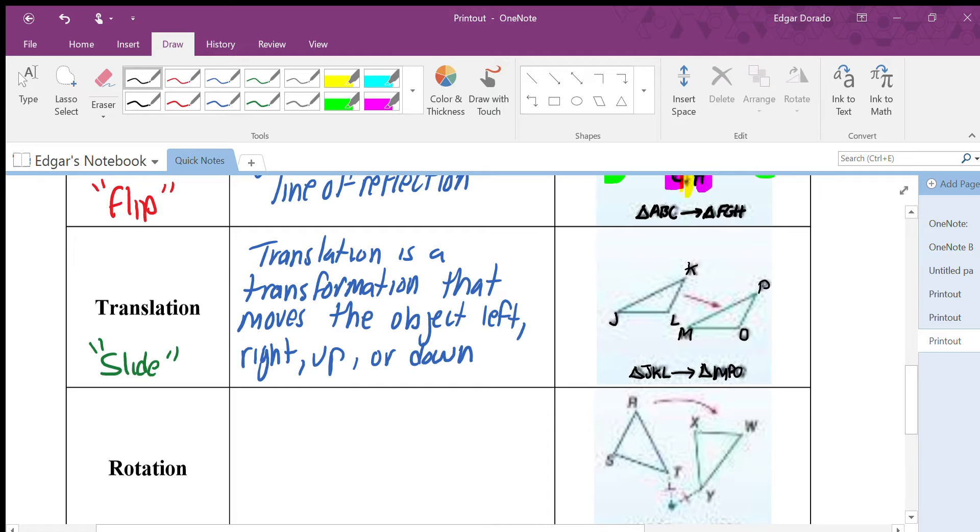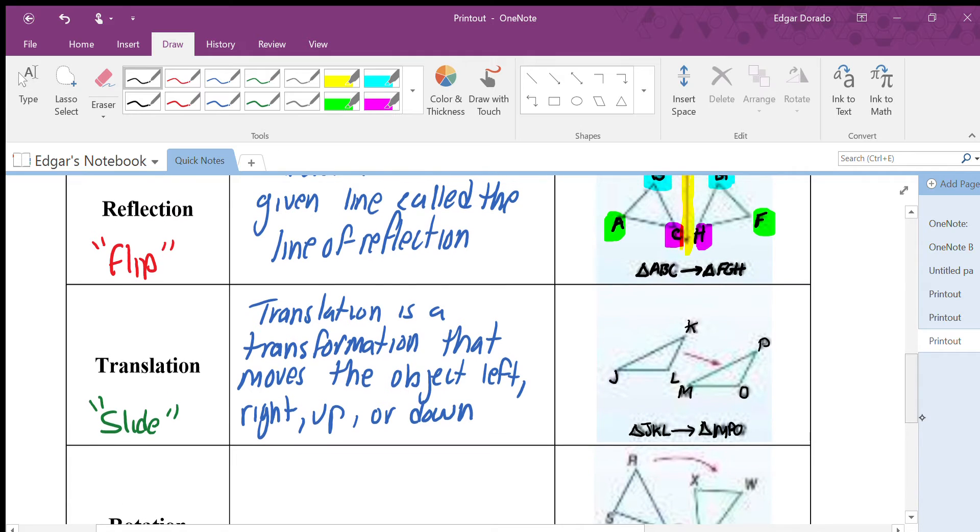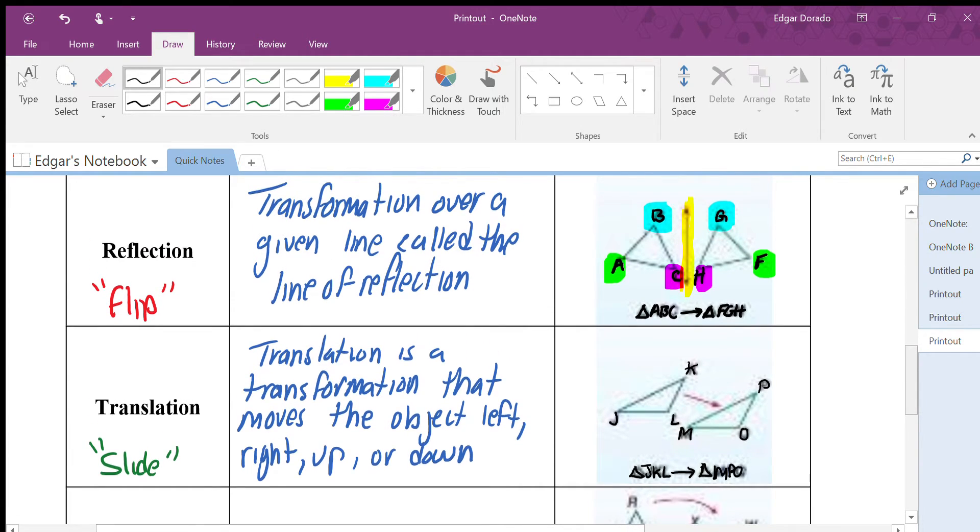All right. So again, notice from J, K, L, that triangle is going not only down a little bit, but also to the right. So that is called a translation. Again, notice that my image basically looks exactly the same. It doesn't really change all that much. It just slides. It just moves over. So the orientation of it stays exactly the same.